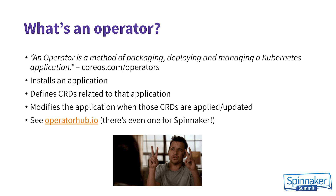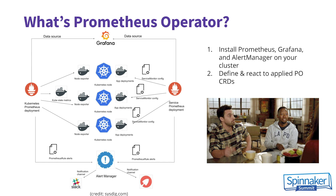OperatorHub.io is a place where you can see a bunch of Kubernetes operators. There is one for Spinnaker — Armory has its own, Ops MX has another — and there are discussions about whether there should be an official Spinnaker community one, so look out for that next year. Prometheus operator specifically will install Prometheus, Grafana, Alert Manager, and kube-state-metrics, then define a bunch of CRDs and react to them. It makes your life easier by installing all these applications and automatically hooking up Grafana to read from Prometheus.